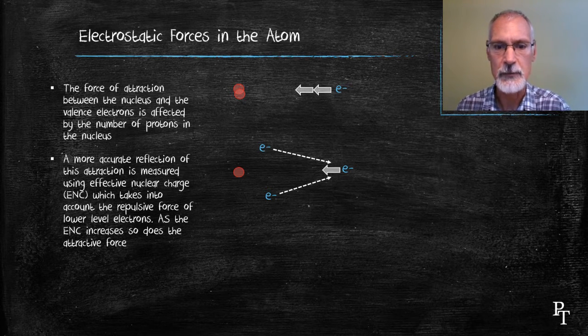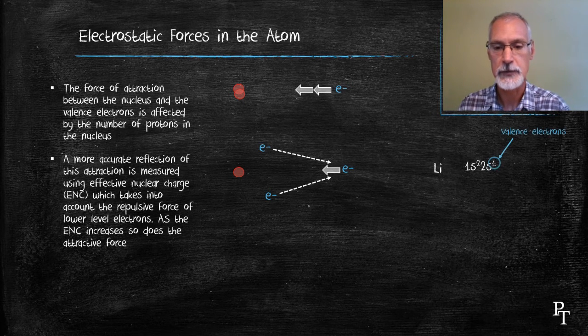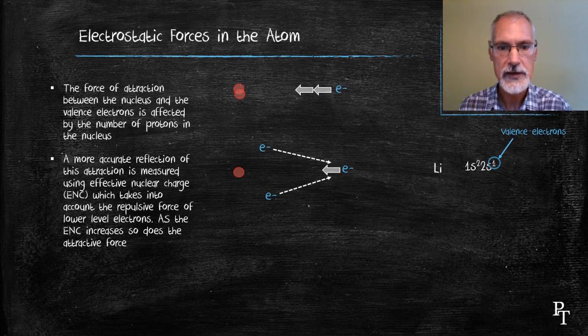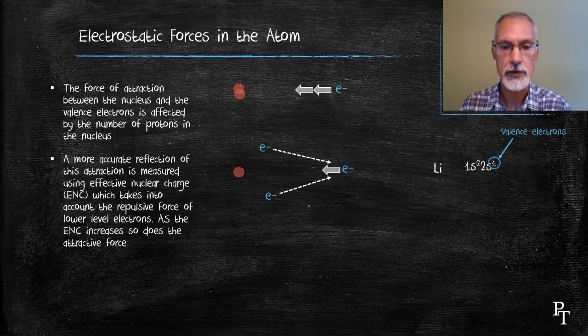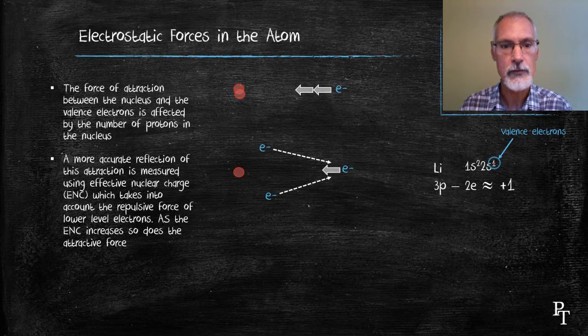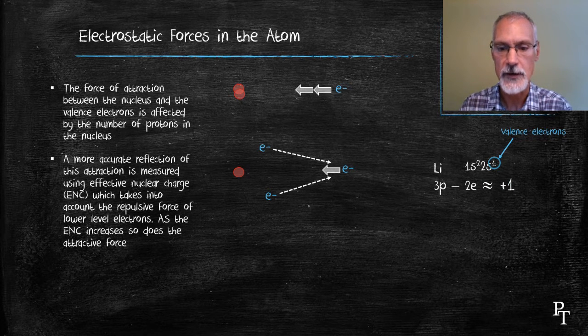If we consider for a minute the element lithium, it has one valence electron that I've identified here in blue, and two inner-level electrons. To calculate the effective nuclear charge, I take a look at the number of protons in lithium, which are three, and I'm going to subtract the number of those inner-level electrons. That leaves me then with an effective nuclear charge of plus one.